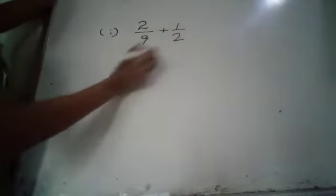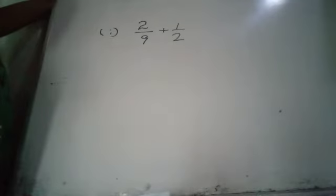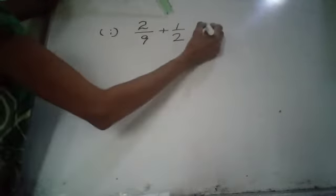Two-ninths of the total amount he donated was used to buy musical instruments, and half to buy sports equipment. Find what fraction of the total amount was used to buy the musical instruments and sports equipment. So the expression is two-ninths plus one-half. Please write this — you have one mark.